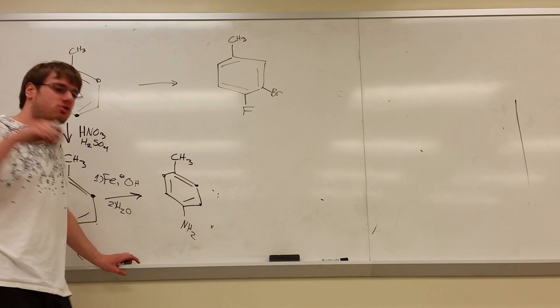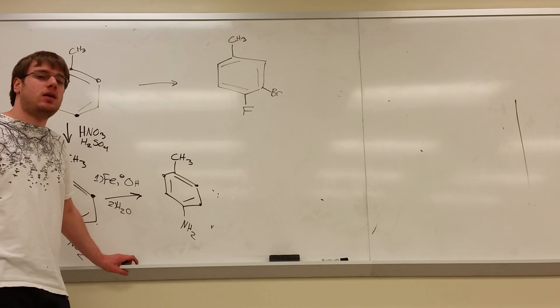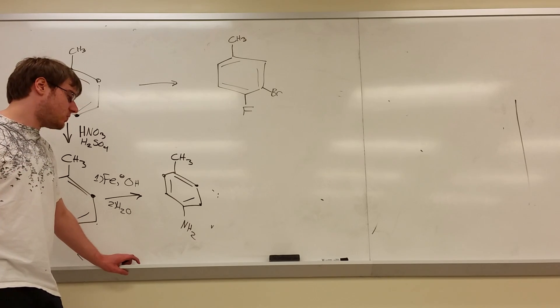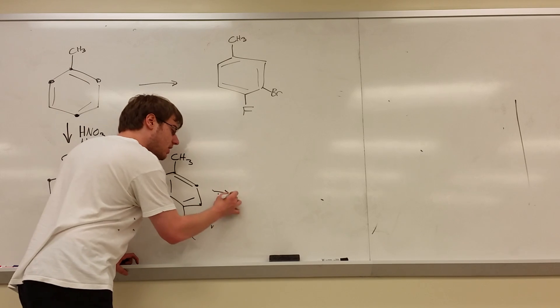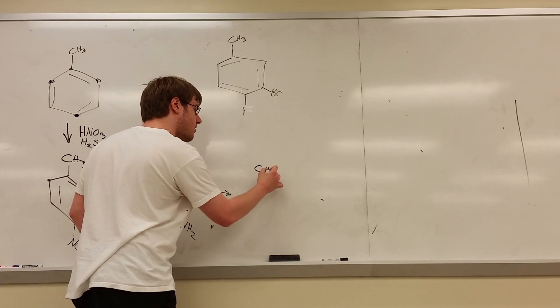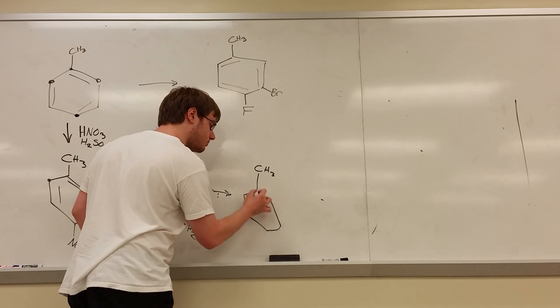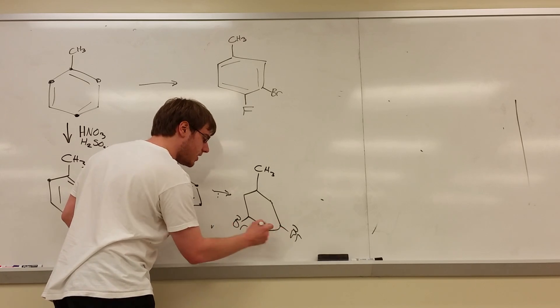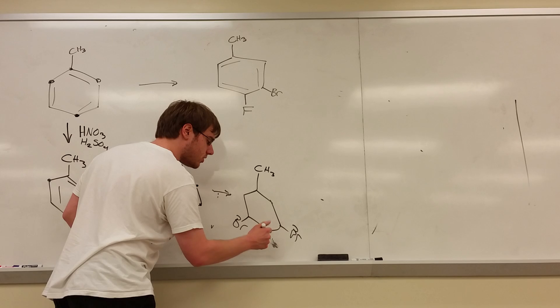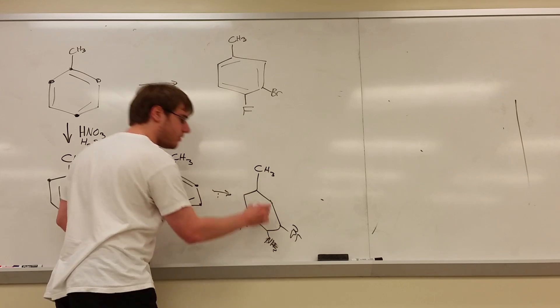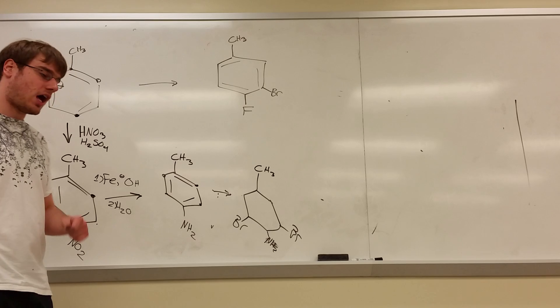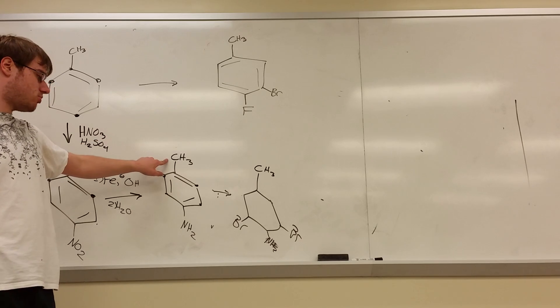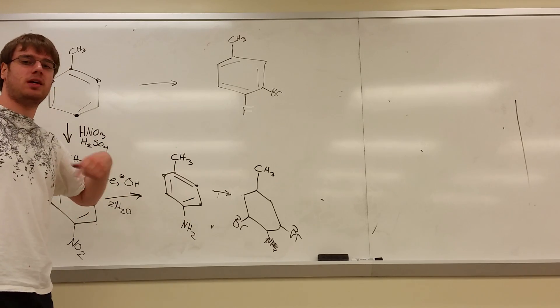But here's the thing: nitrogen is such a powerful donating group that it won't just add that bromine once. It's going to keep adding until there's no spots left, which means we can't actually add the bromine yet. If I did that Br2 FeBr3, at the very least I would expect to get both those ortho positions filled by the NO2, and quite frankly these two spots might get filled as well, but we don't want that.